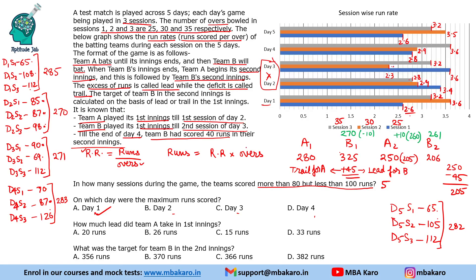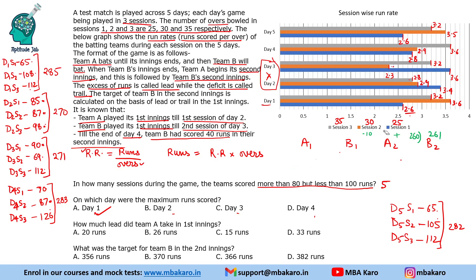Now the question: how much lead did team A take in its first innings? Team A played till the end of the first session of day 2, scoring 285 + 85 = 370 runs. Team B played its first innings till the second session of day 3, scoring 98 + 87 + 159 = 344 runs. This gives team A a lead of 26 runs.